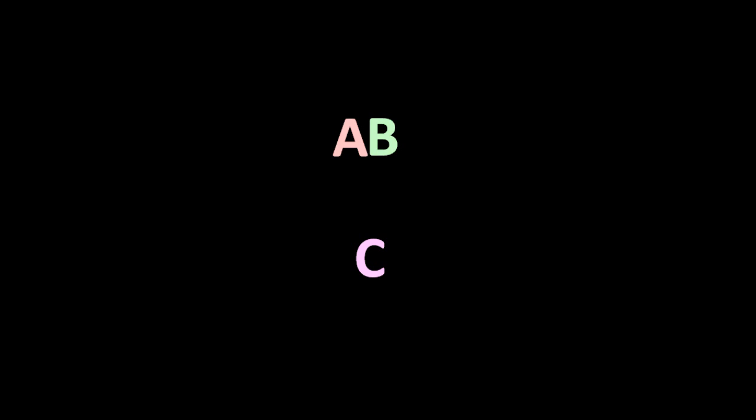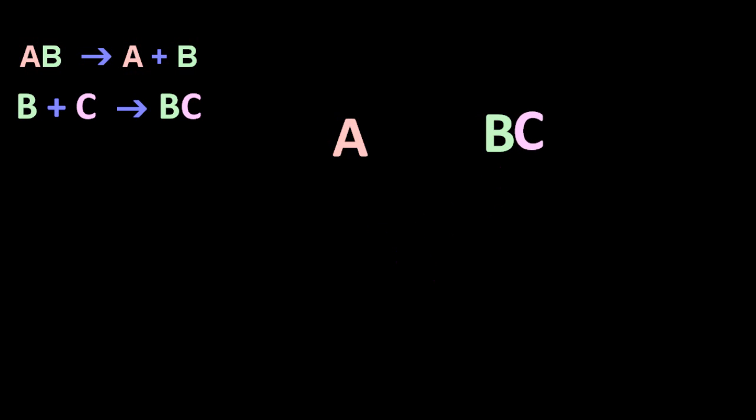So let's look at a simple two-step mechanism. B jumps off of A and then C jumps onto B. Very exciting. Step one, B comes off and step two, C goes on. So those are the two steps in this two-step mechanism.